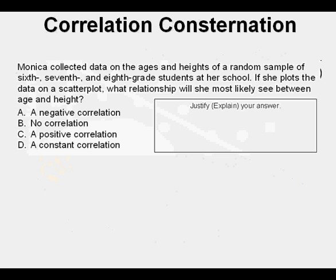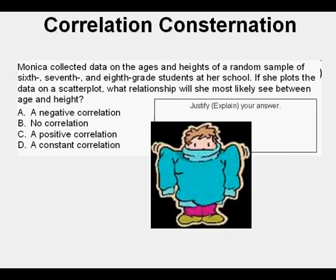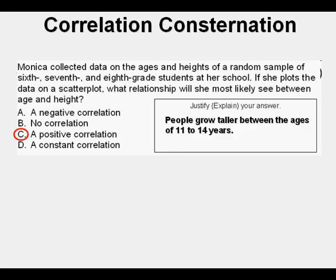Here's a problem about correlation. Monica collected data on the ages and heights of a random sample of 6th, 7th, and 8th grade students. If she plots the data on a scatter plot, what relationship will she most likely see between age and height? The options are: A negative correlation, B no correlation, C positive correlation, D constant correlation. This is basically a just-use-your-brain problem. Can you remember when you were in 6th, 7th, and 8th grade — were you shrinking? Of course not. You were growing. When time passes and people get taller, that's a positive correlation between age and height.